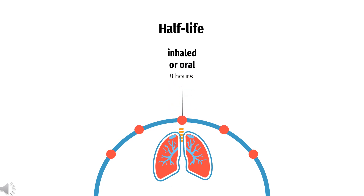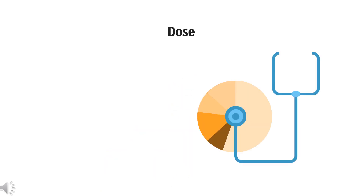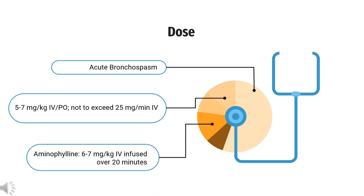Half-life: 8 hours. How to use theophylline — Acute bronchospasm, Loading dose: Patients not currently taking theophylline, 5–7 mg/kg IV, not to exceed 25 mg per minute. For aminophylline: 6–7 mg/kg, infused over 20 minutes. Maintenance: 0.4–0.6 mg/kg/hr IV, or 4.8–7.2 mg/kg PO.